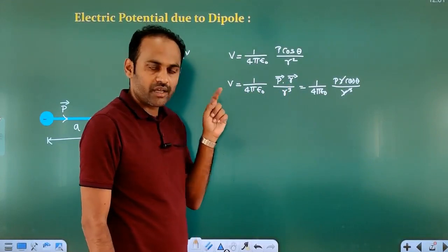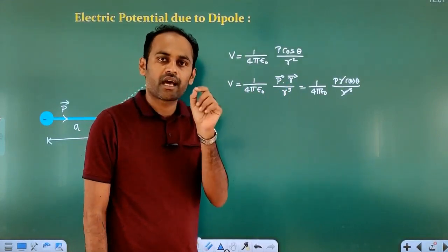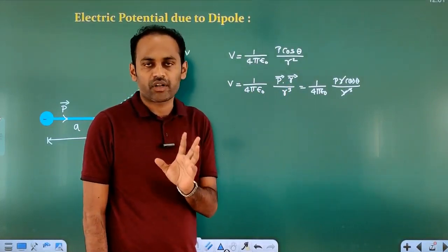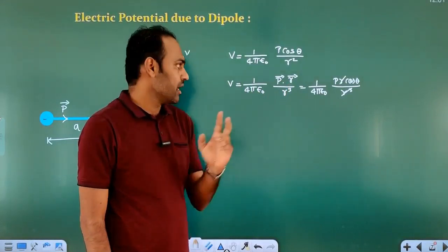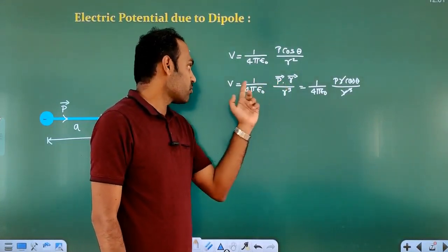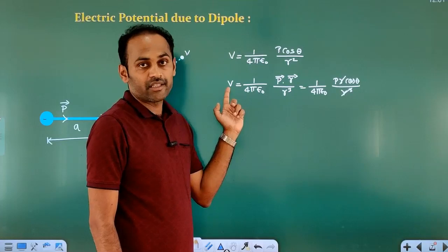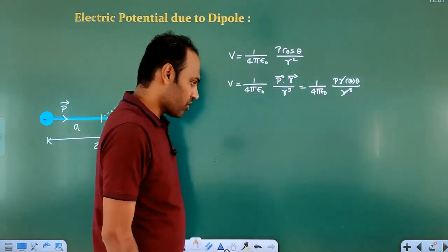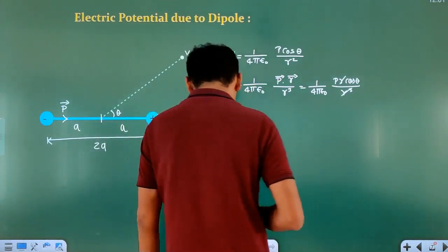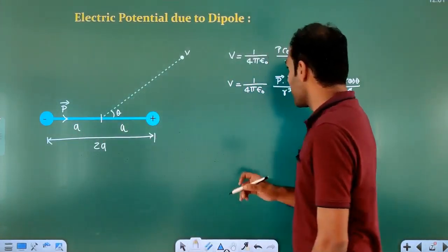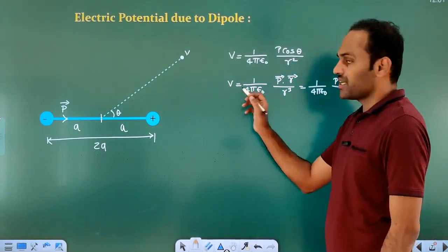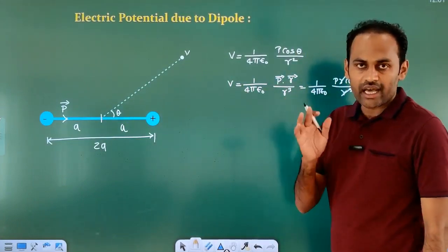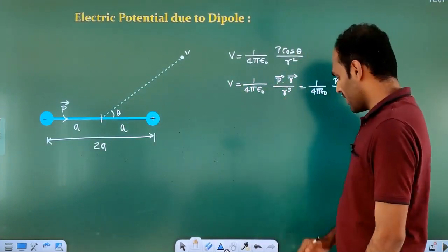Potential is a scalar quantity, not a vector quantity. Because it is scalar, you must express it using dot product only — not cross product. So we always write it as a dot product.